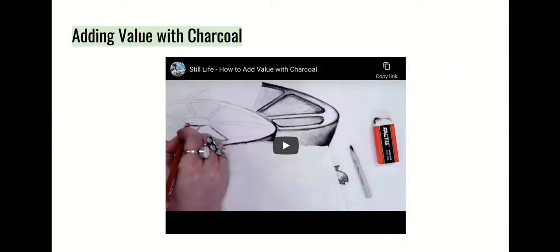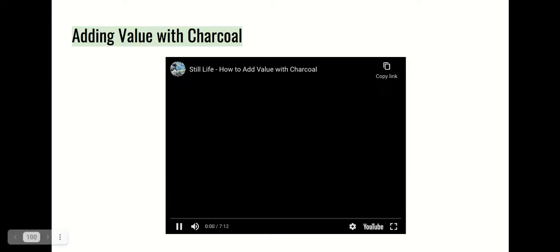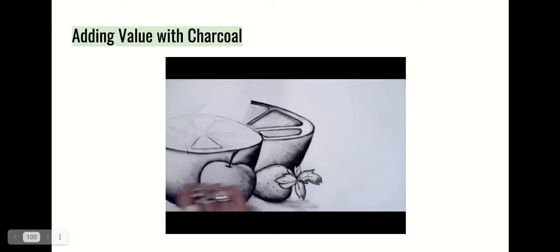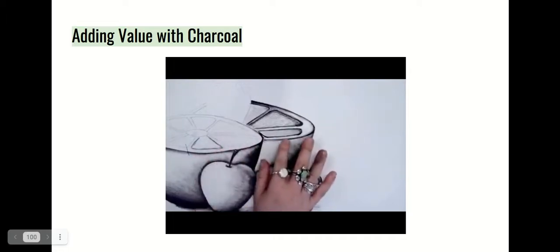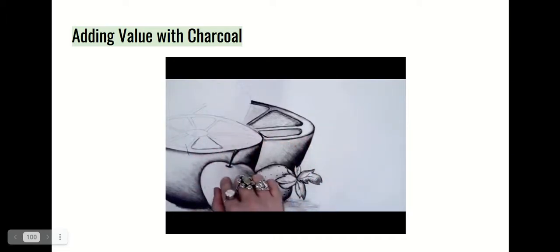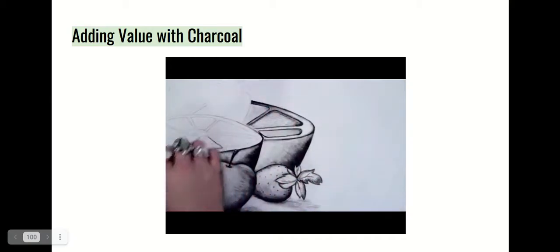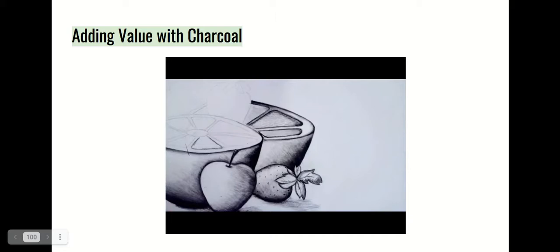That's why it's so important that when you took your picture at the beginning of this project, you made sure you had a good light source — meaning your light was on, you were outside, or near a window — because you want to see exactly where the lights and darks are. Let's take a look at how Ms. Parlow adds value with charcoal. I started creating value within my still life — I'm working on a grapefruit cut in half, an apple, and two strawberries.